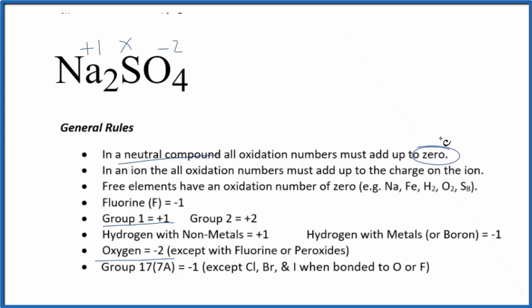Since everything equals zero, we have a neutral compound, we can just write an equation. Two times one, that's two, plus we don't know the sulfur, that's X. And four times minus two is minus eight. All of this equals zero.